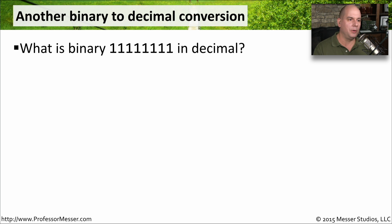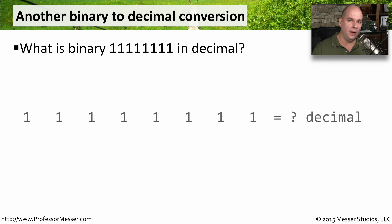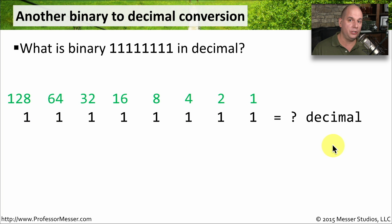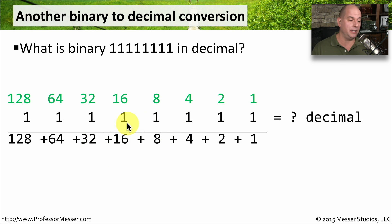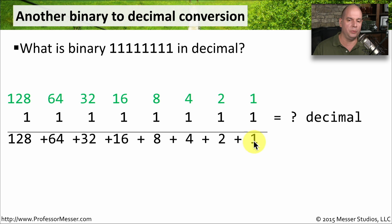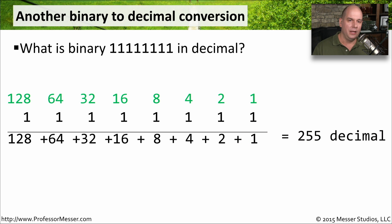Let's do another one. This time I'm going to give you the binary number 11111111 in decimal. It's the same process we just performed — we take those ones and bring them all the way down, add our conversion chart on top, and bring down every number that has a 1 associated with it. In this case, every position has a 1. So our question is: what is 128 plus 64 plus 32 plus 16 plus 8 plus 4 plus 2 plus 1? If you add all of those together, you get 255 in decimal.